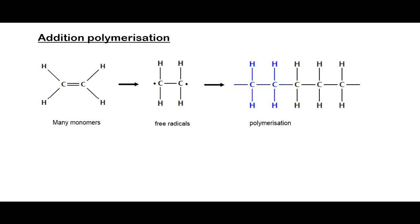Looking at addition polymerization more closely, we see that there are many monomers — for example the ethene molecule. There are thousands of them available, and under high pressure and high temperature, the double bond breaks and free radicals are formed, with unbonded electrons on both sides. Because they are free radicals, they are unstable and readily combine with other ethene molecules where a double bond is broken and electrons are ready for bonding, rapidly combining to form very, very long molecules which we call polymers.